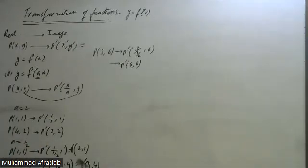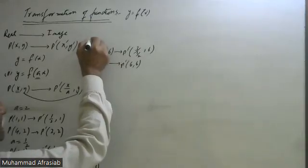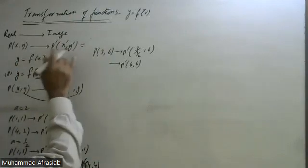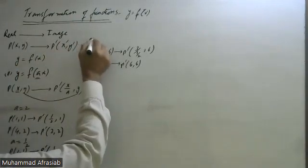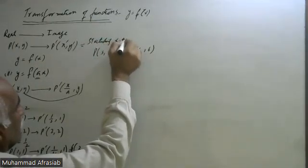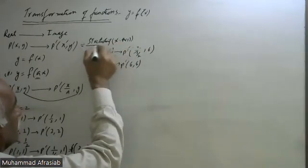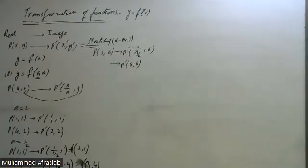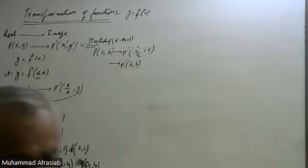So it is basically this property used for the topic of transformation: y = f(ax) means x, y will map to (x/a, y). Whenever y = f(ax), x will be changed to x/a and y retains its position.